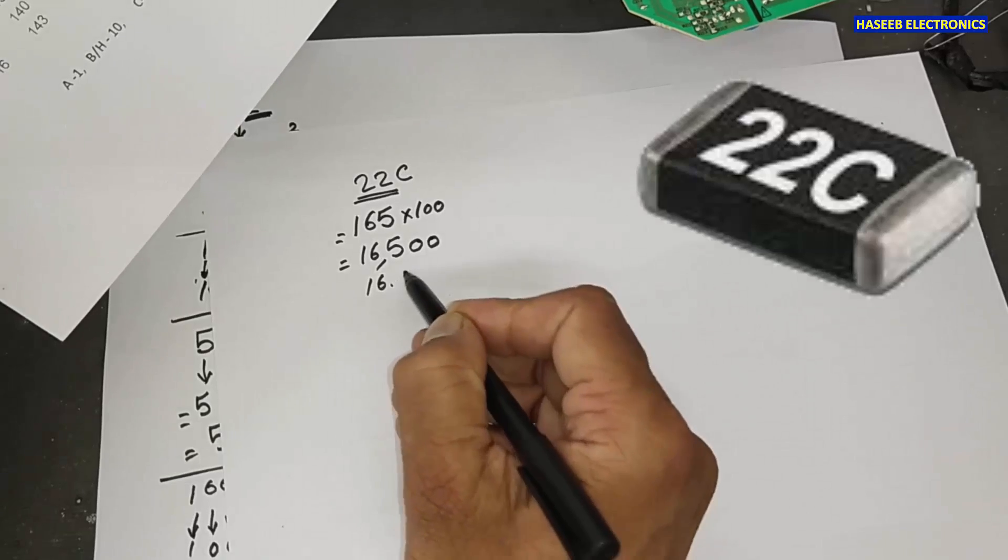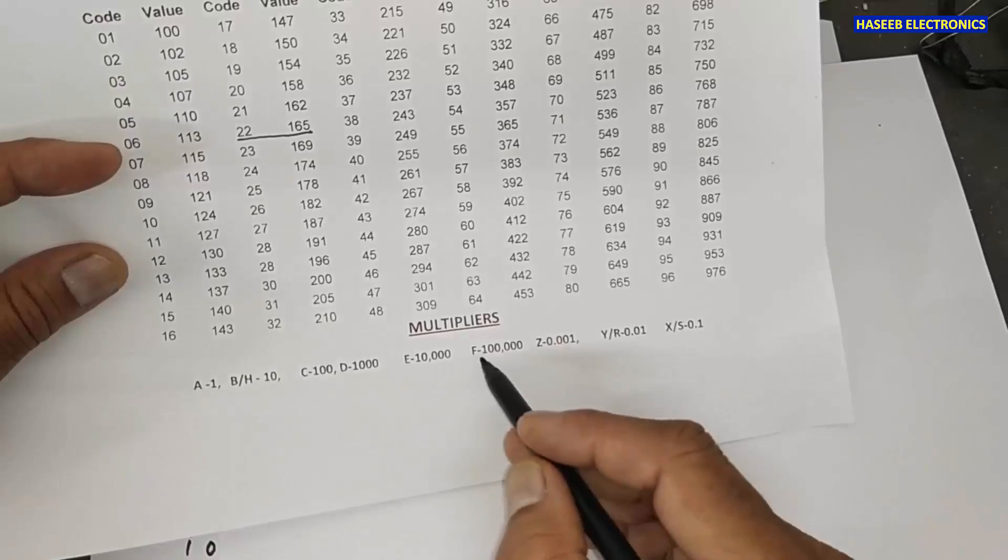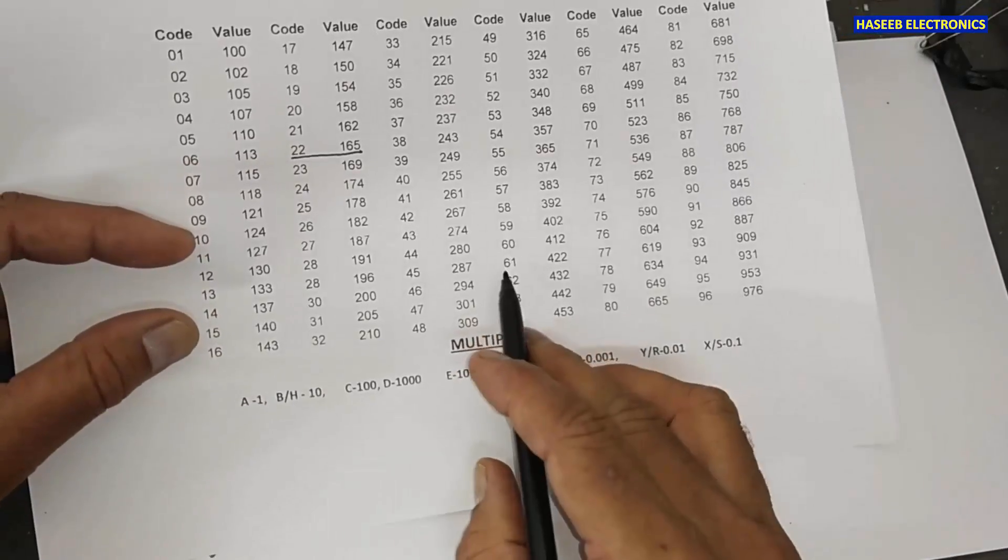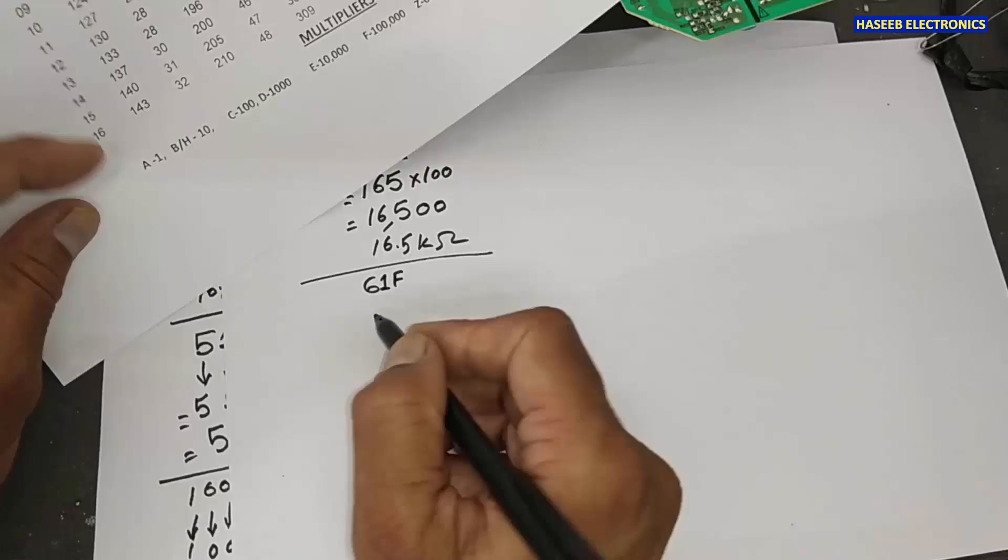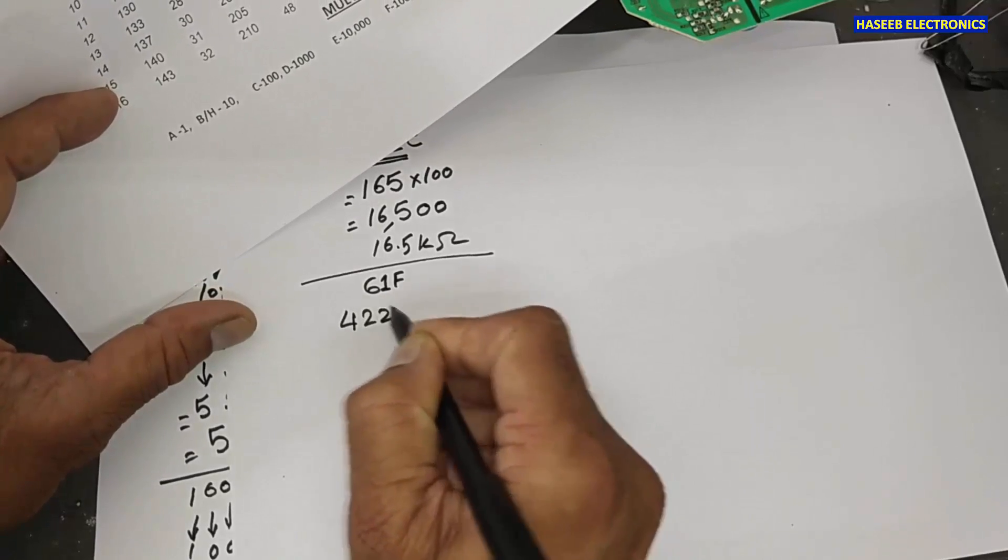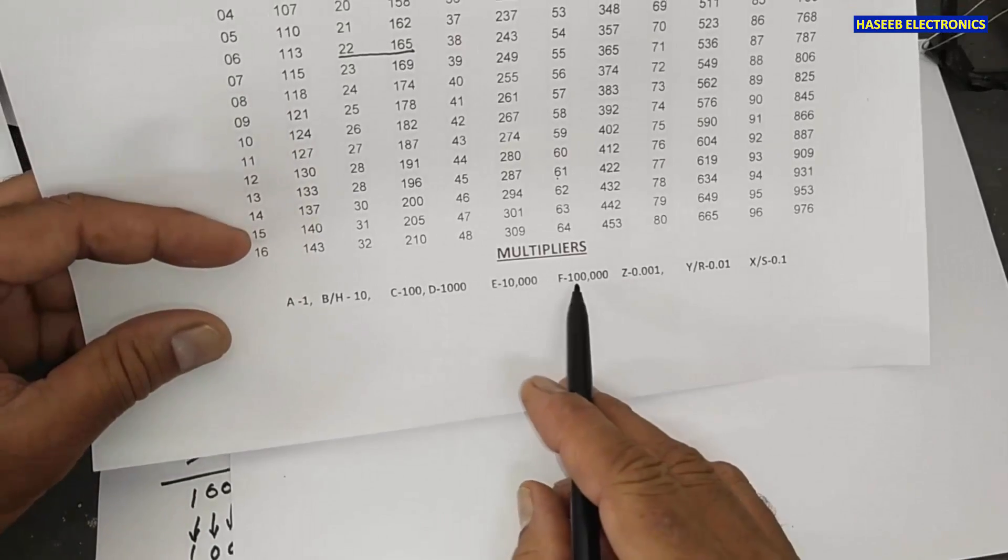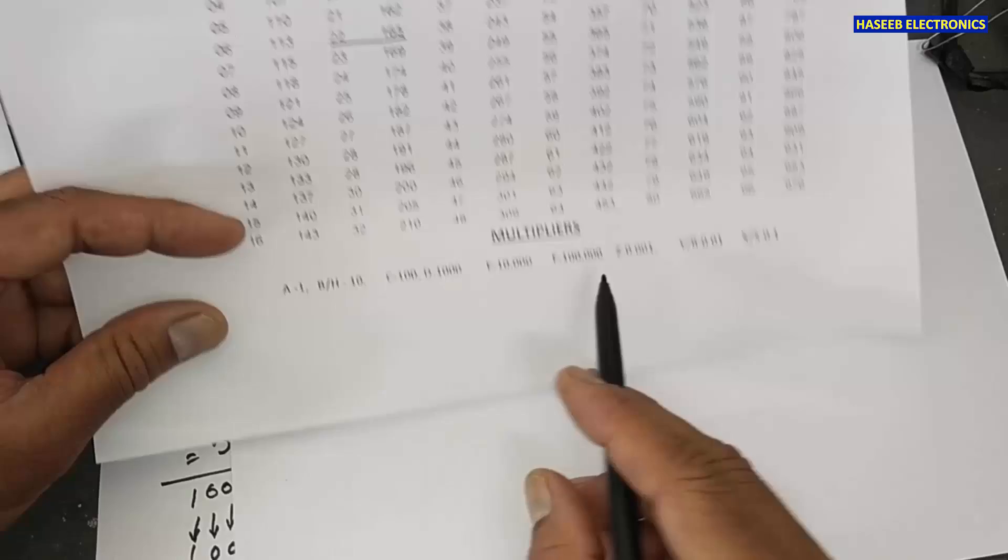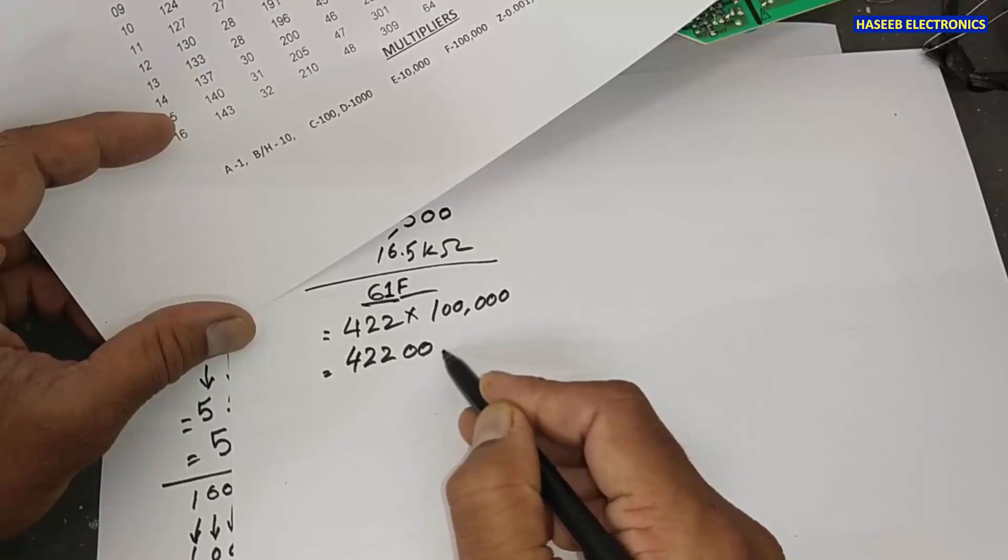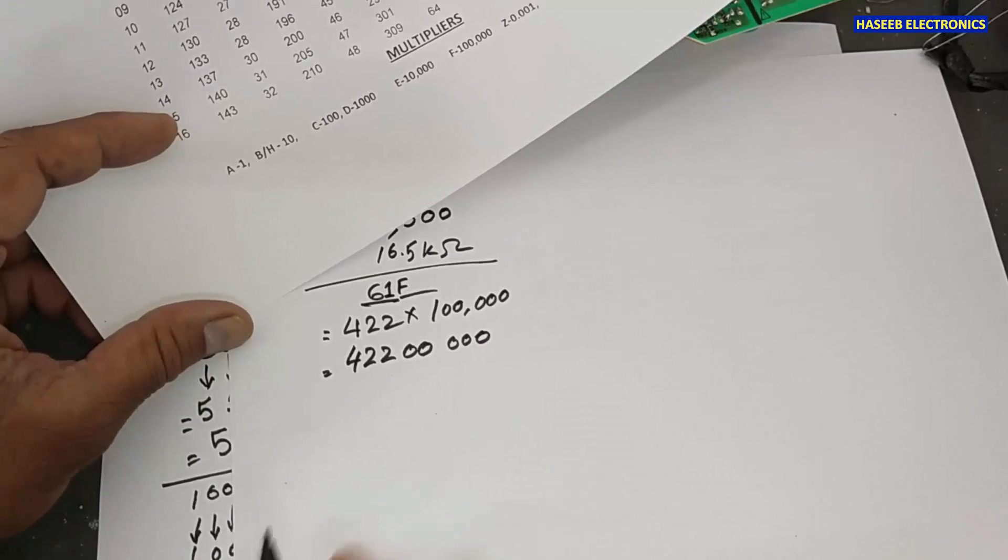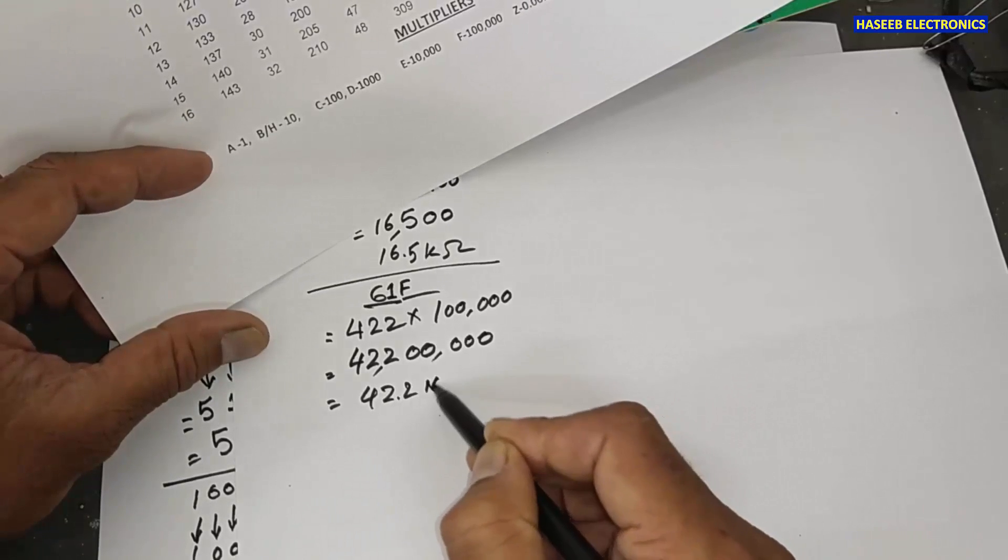If I have 61, 61F. At that time, we will see the number 61. And what is the resistor value? That is 422. This 61, it will come here. And F, that is multiplier. And F is 100,000. So, the resistor value will become 422, 1, 2, 1, 2, 3. It is an example. The resistor value is 42.2 megaohms.